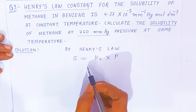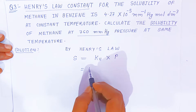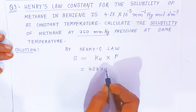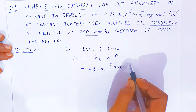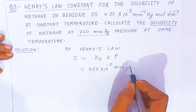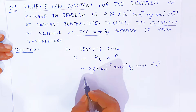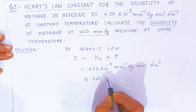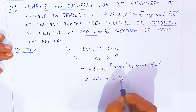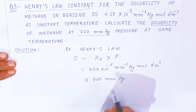So students, you just have to put the values — very simple for a two-marks question. KH is given as 4.27 × 10⁻⁵ per mm mercury mole per dm³. You have to multiply with 760 mm mercury.